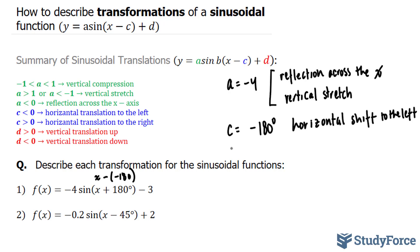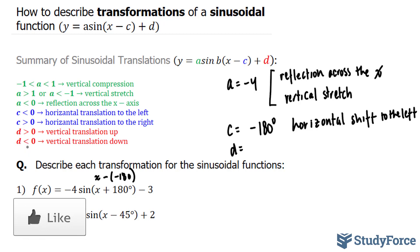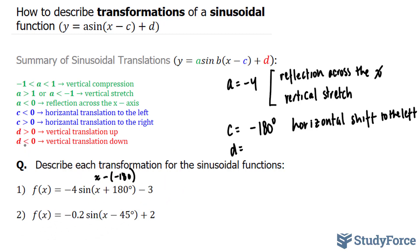Lastly, our d value in this function is negative 3. We are told that if d is negative — less than 0 — you end up with a vertical translation downwards, meaning that all the y-coordinates will be subtracted by 3. So you end up with a vertical transformation downwards.